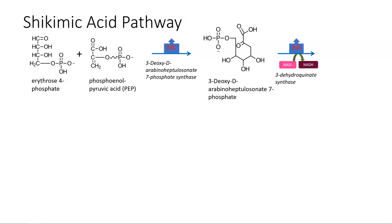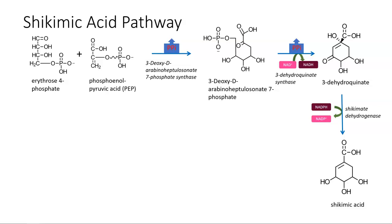The enzyme 3-dehydroquinate synthase and NAD remove the phosphate group and close the ring structure to form 3-dehydroquinate. The enzyme shikimate dehydrogenase and NADPH then react with the 3-dehydroquinate to form shikimic acid.